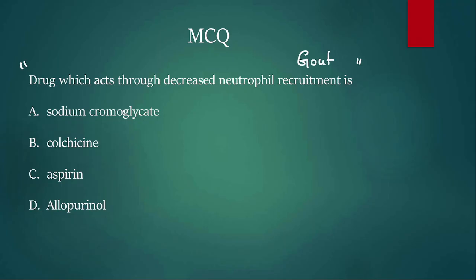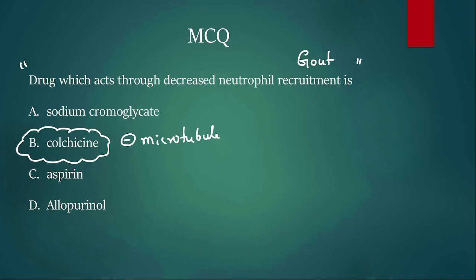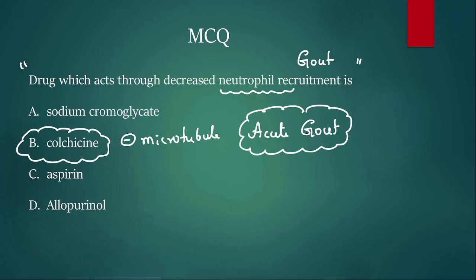Usually the question is set in a gout condition. If they mention gout, the answer is colchicine. Colchicine inhibits microtubule action, so neutrophils cannot move properly to the site of inflammation. Colchicine is used to manage acute gout — it decreases neutrophil chemotaxis. The drugs of choice for acute gout are NSAIDs: diclofenac, indomethacin, ibuprofen.